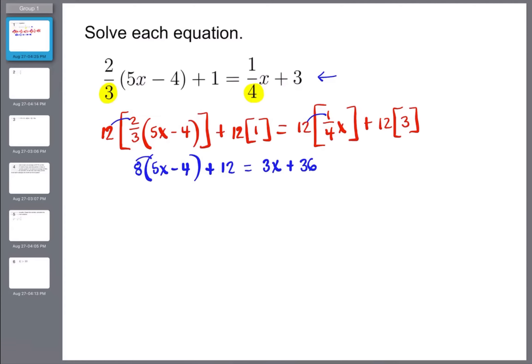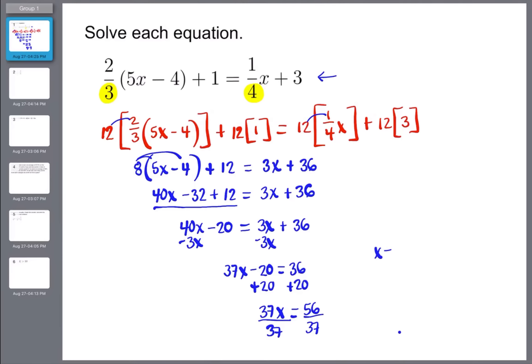So if we distribute eight times five and eight times negative four, we're going to get 40x minus 32 plus 12 is equal to three x plus 36. You notice on this side, I have three terms. Whenever there are three terms in a linear problem, that means two of them will combine if not all three. But in this case, the negative 32 and 12 will combine. We use the signs that are there, not changing it because we're not moving it to the other side. So negative 32 plus 12 gave me that negative 20. And then I have 40x minus 20 equals three x plus 36.